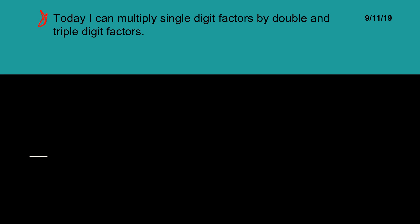I can multiply single digit factors by double and triple digit factors. So that means I'm multiplying two by one, three by one, and even four by one. And again, this is a review from fourth grade just to get our feet wet before we start doing the more advanced multiplication with algorithms.